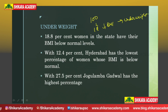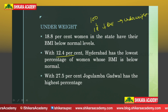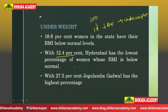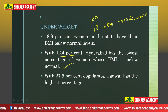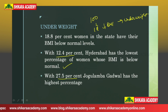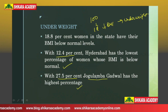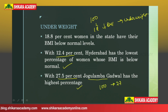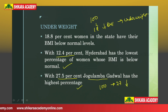With 12.4 percent, Hyderabad has the lowest percentage of women whose BMI is below normal. With 27.5 percent, Jogulamba Gadwal has the highest percentage of underweight women — meaning around 27 out of every 100 women in Gadwal are underweight.